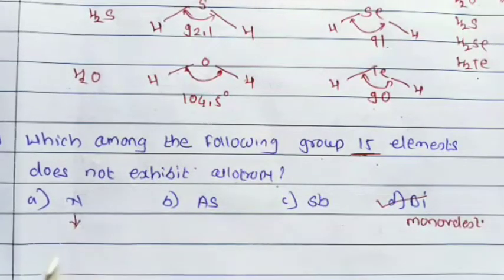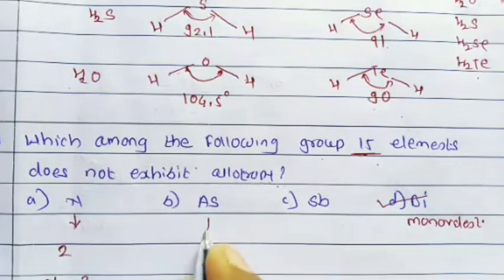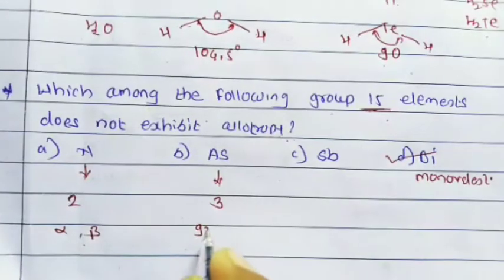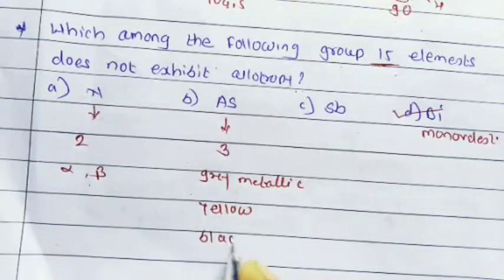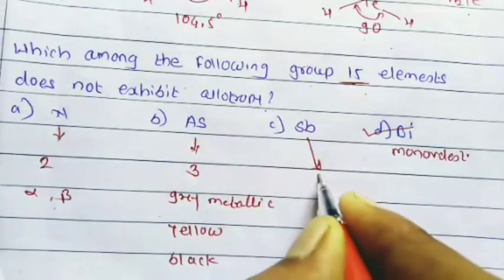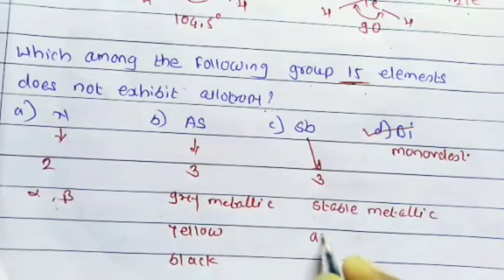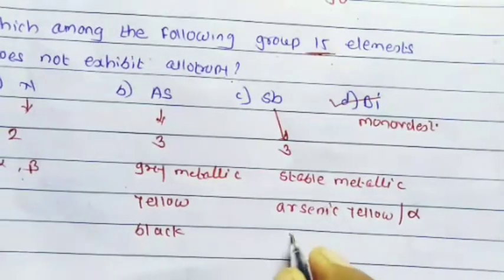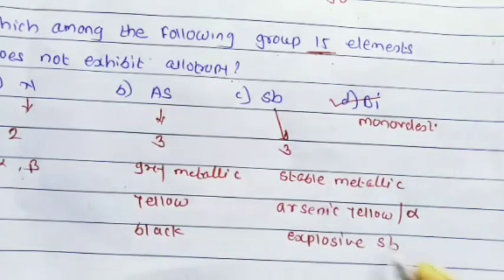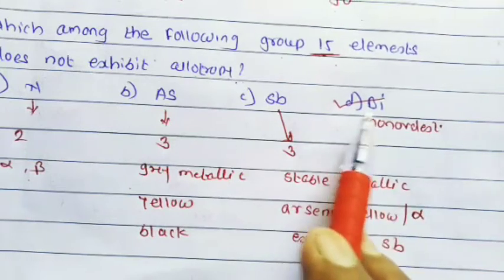Nitrogen gives two allotropes: alpha and beta nitrogen. Arsenic gives three allotropic forms: gray metallic, yellow, and black arsenic. Antimony also gives three allotropic forms: stable metallic, yellow (alpha antimony), and explosive antimony. But bismuth does not exhibit any allotropic form.